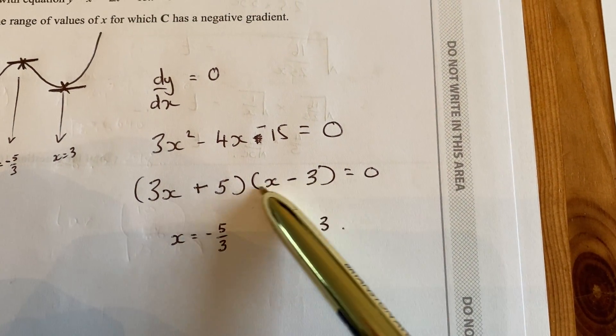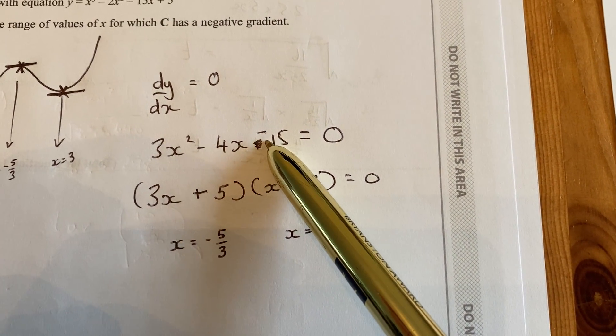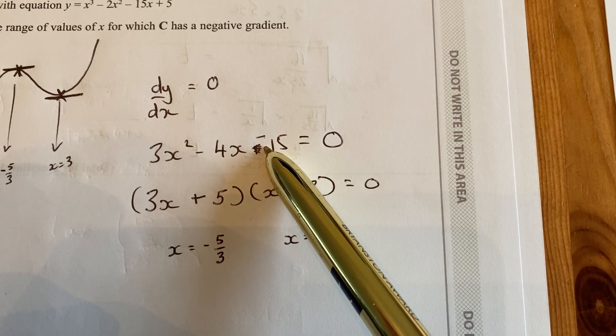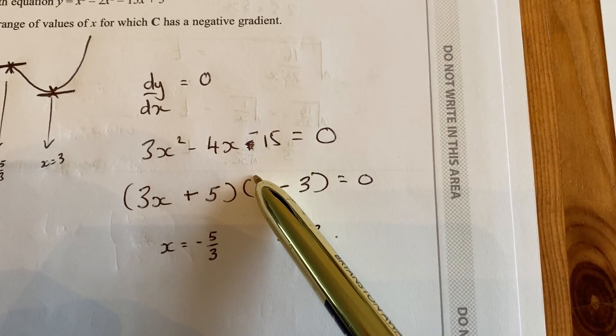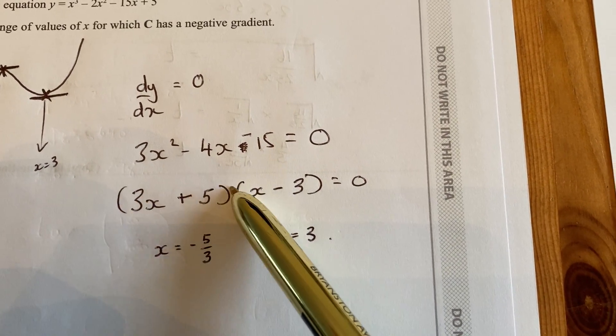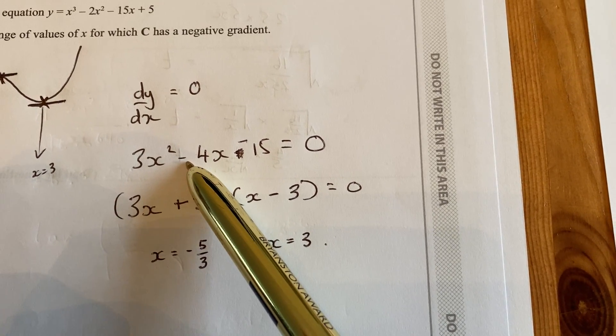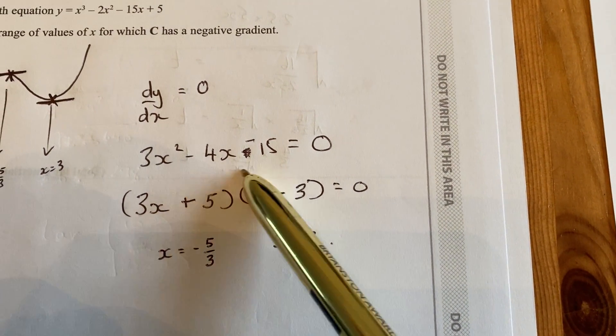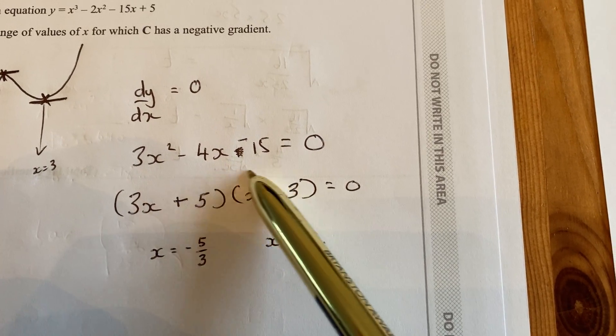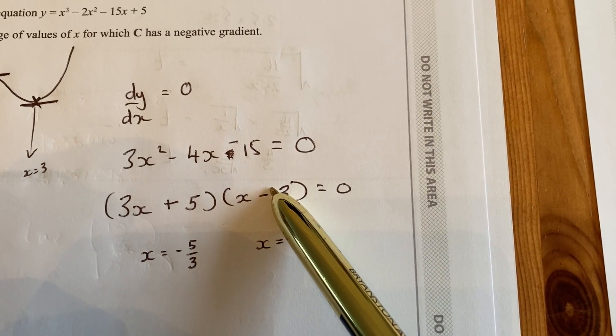You need two numbers that multiply and make minus 15. One of them's got to be a plus, and one of them's got to be a minus for that to happen. And one of them needs to times by 3, and the other one adds on to make minus 4. So you might need to manipulate or play with that for a little bit until you come up with the answers of plus 5 and minus 3.